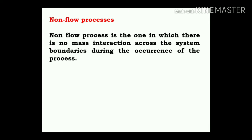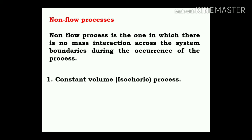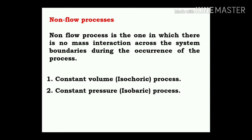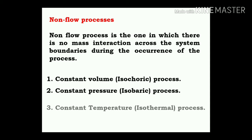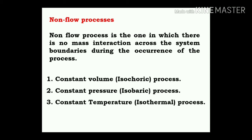The polytropic process is considered a non-flow process in which there is no mass interaction across the system boundaries during the occurrence of the process. There are many types of non-flow processes: constant volume process (isochoric), constant pressure process (isobaric), constant temperature process (isothermal), and adiabatic process in which there is no heat transfer — only work done carried out by the storage of internal energy.